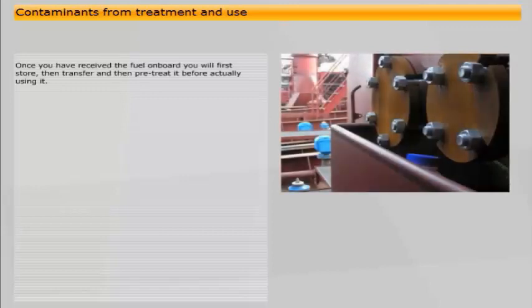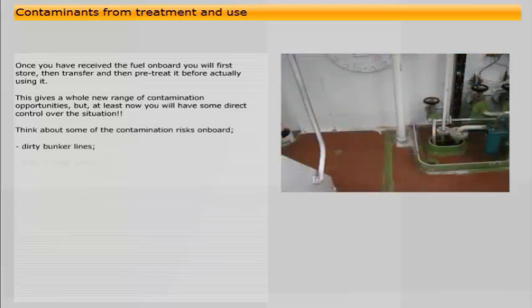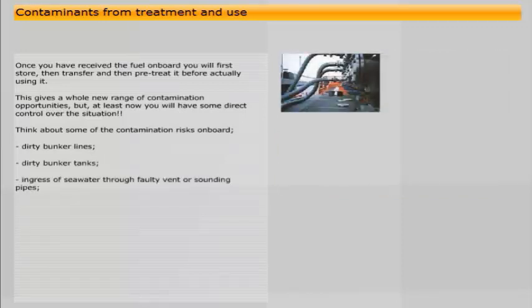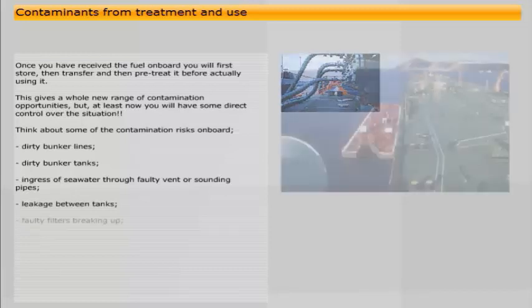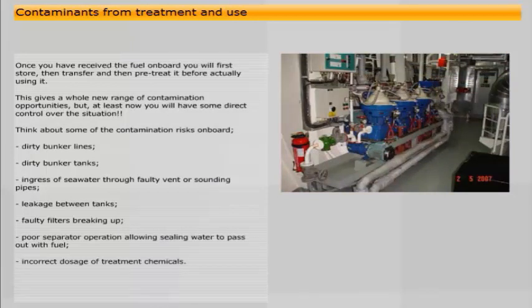Once you have received the fuel on board, you will first store, then transfer, and pretreat it before actually using it. This gives a whole new range of contamination opportunities. But at least now you will have some direct control over the situation. Think about some of the contamination risks on board: dirty bunker lines, dirty bunker tanks, ingress of seawater through faulty vent or sounding pipes, leakage between tanks, faulty filters breaking up, poor separator operation allowing sealing water to pass out with fuel, incorrect dosage of treatment chemicals. These are just some possibilities. You can probably think of more.